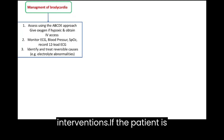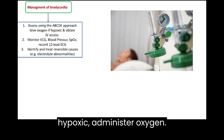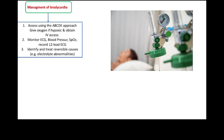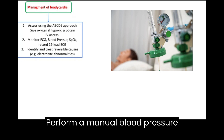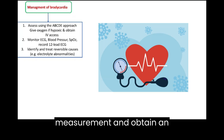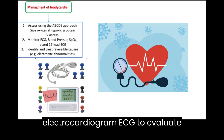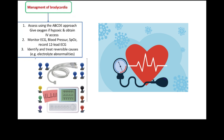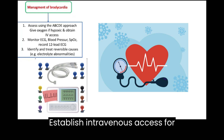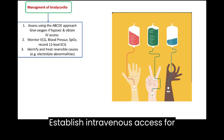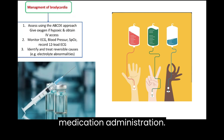Step 1: Assess the patient and provide necessary interventions. If the patient is hypoxic, administer oxygen. Perform a manual blood pressure measurement and obtain an electrocardiogram (ECG) to evaluate the heart's electrical activity. Establish intravenous access for medication administration.